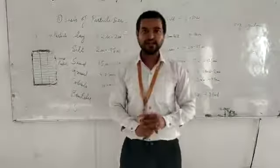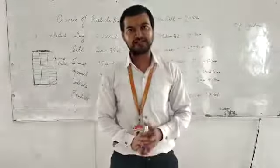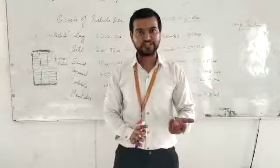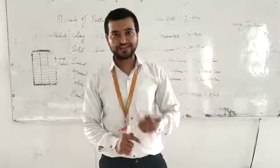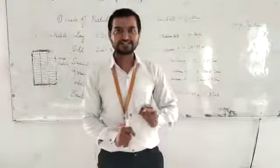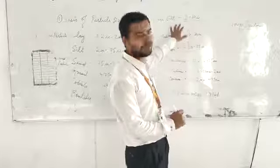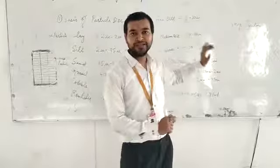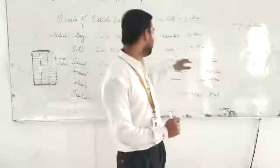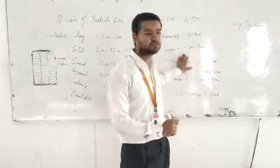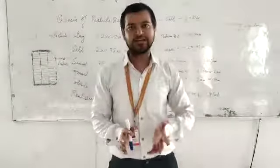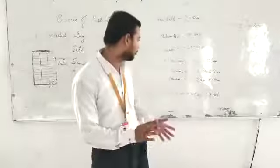We have a further classification within silt. Silt has been classified into fine silt, medium silt, and coarse silt. The size of fine silt is 2 micron to 10 micron, medium silt is 10 micron to 20 micron, and coarse silt is 20 micron to 75 micron.